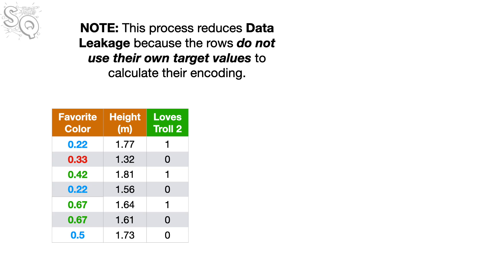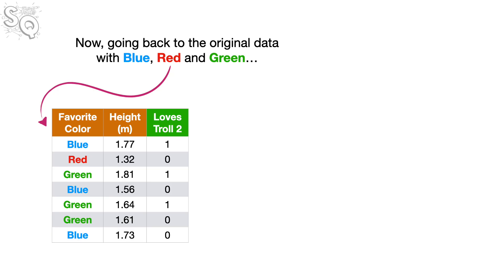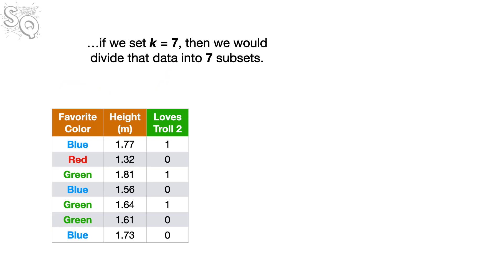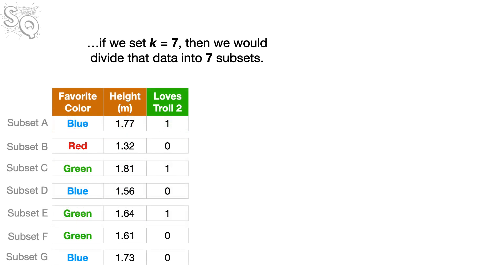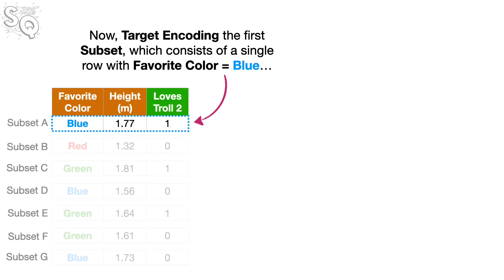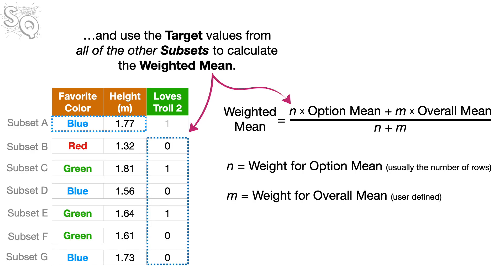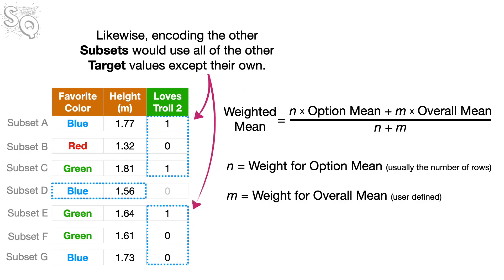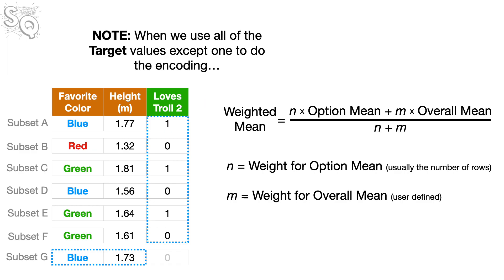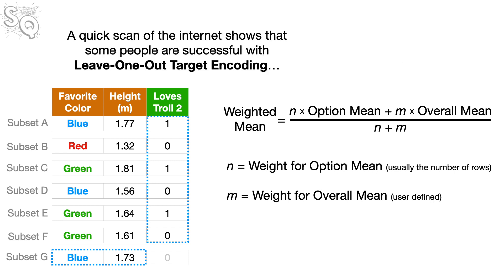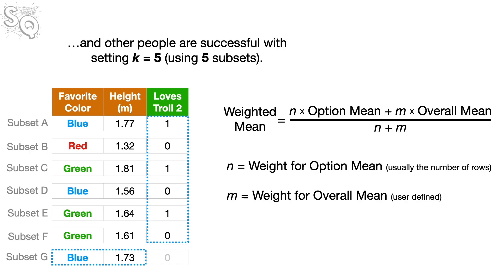Note, this process reduces data leakage because the rows do not use their own target values to calculate their encoding. Now, going back to the original data with blue, red, and green, if we set K equal to 7, then we would divide the data into seven subsets. Target encoding the first subset, which consists of a single row with Favorite Color equal to blue, means we ignore its target value and use the target values from all of the other subsets to calculate the weighted mean. Likewise, encoding the other subsets would use all of the other target values except their own. Note, when we use all of the target values except one to do the encoding, it's called leave-one-out target encoding. A quick scan of the internet shows that some people are successful with leave-one-out target encoding, and other people are successful with setting K equal to 5.